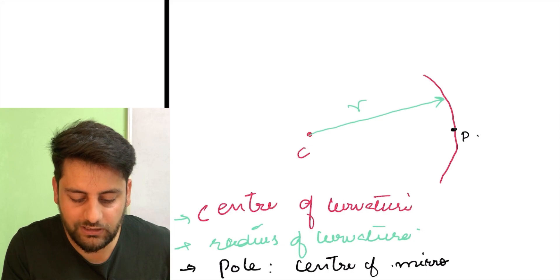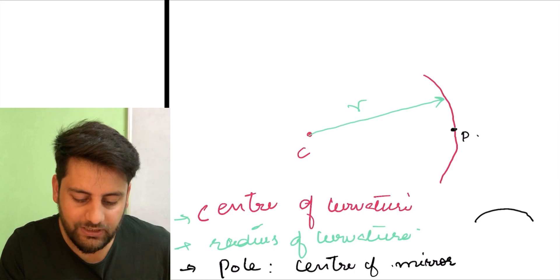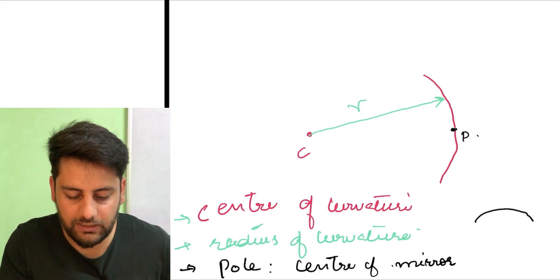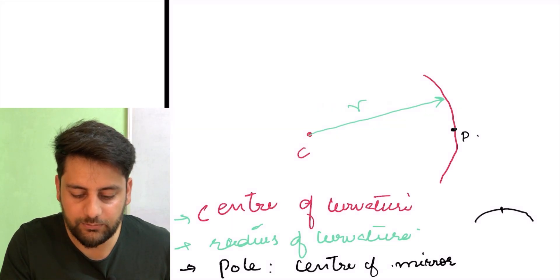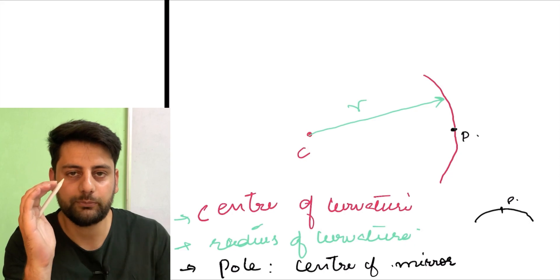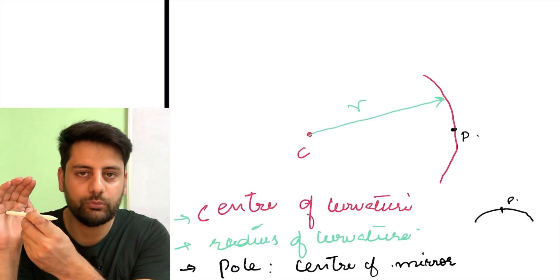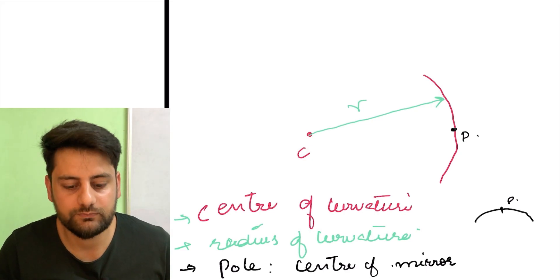If you remember, suppose you've seen an umbrella. Suppose yeh ek umbrella hai. The point where the metal rod pierces the umbrella at its center, that is basically our pole, exactly that same point for this mirror. Agar yeh mera mirror hai, jahan pe woh center aapko milega, this point, that is basically the pole.